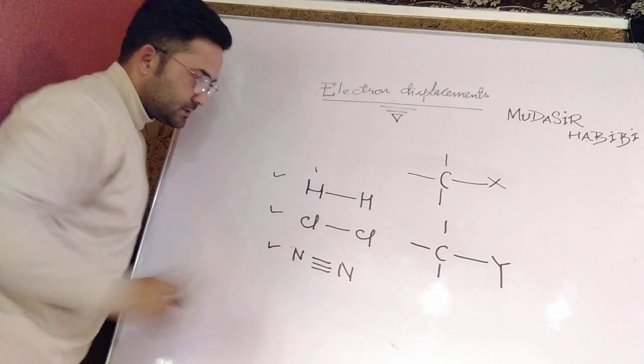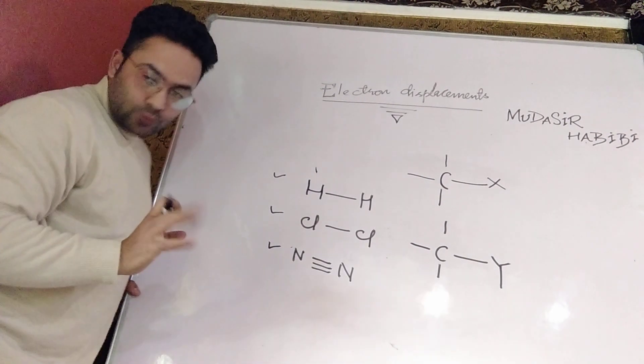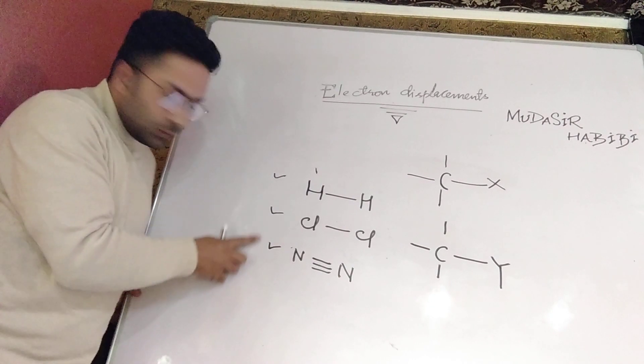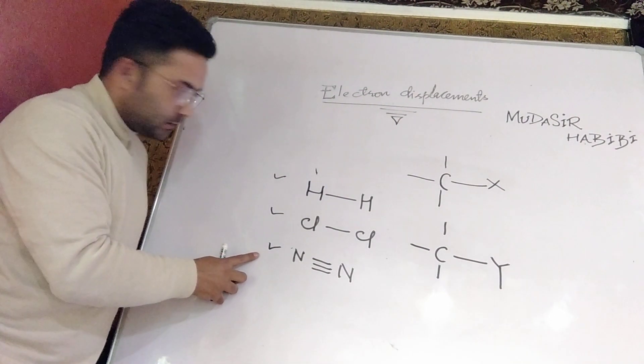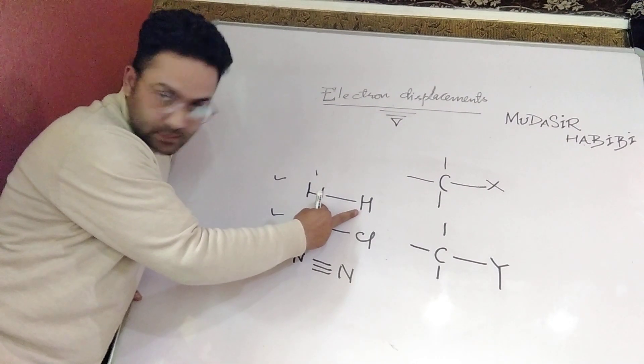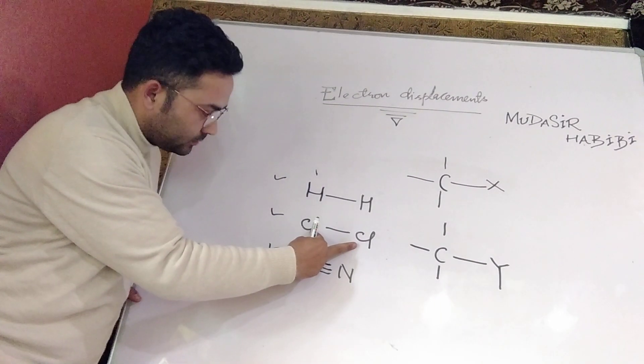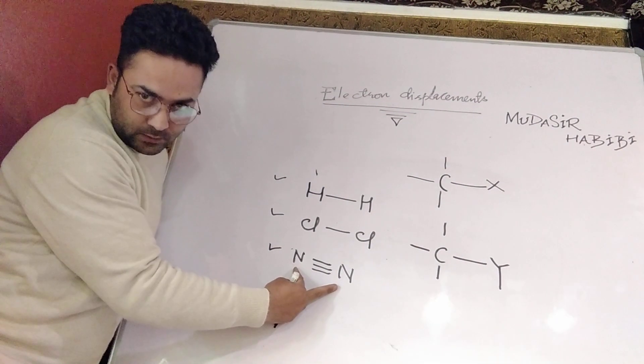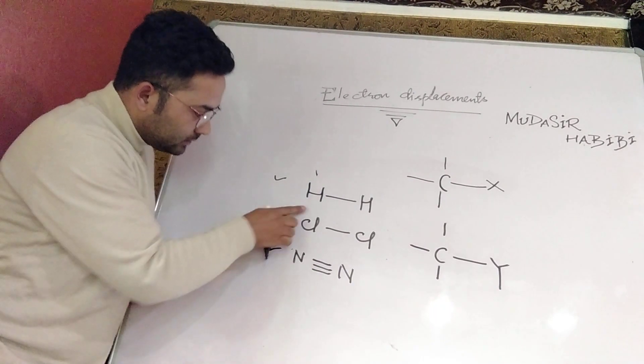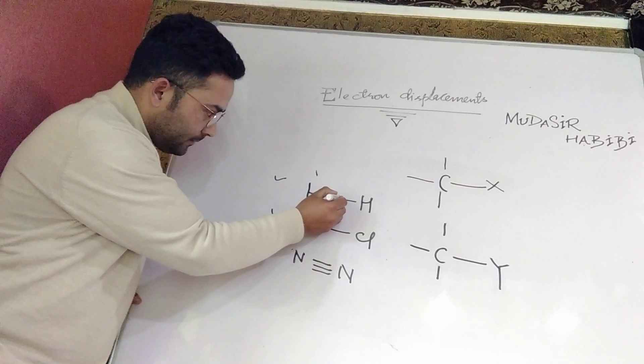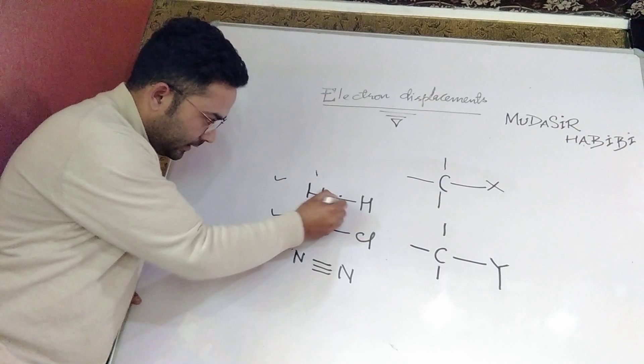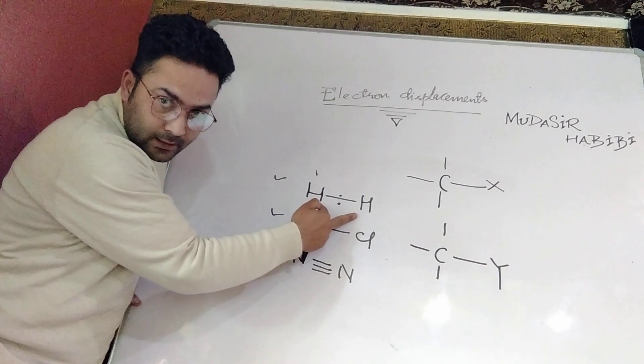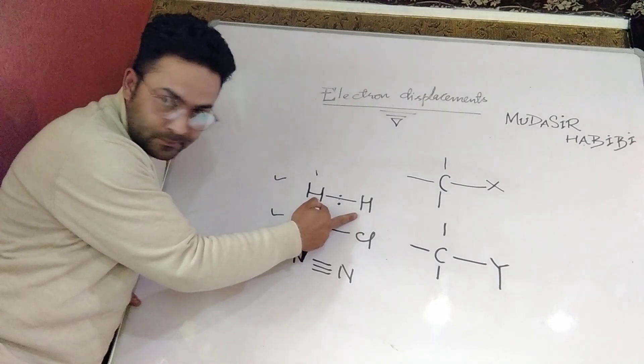We are taking three molecules over here in which bonds are formed between same atoms. In case of H2, bond is present between hydrogen and hydrogen. In case of chlorine, bond is present between Cl and Cl. Likewise, in case of N2 molecule, the bonds are present between two nitrogen atoms. Basically, in these molecules, the shared pair of electrons will remain in the center because both have the same electronegativity.